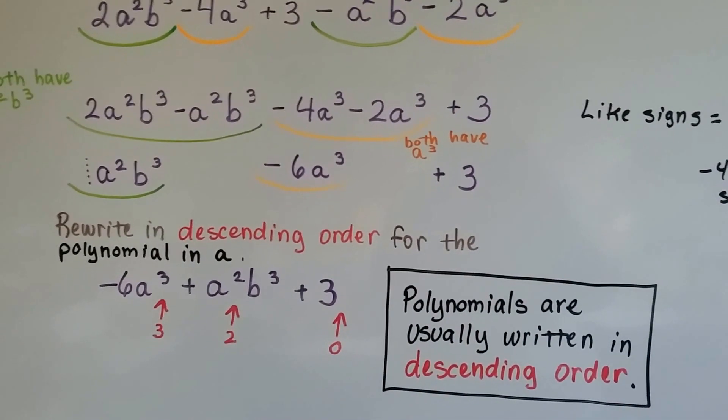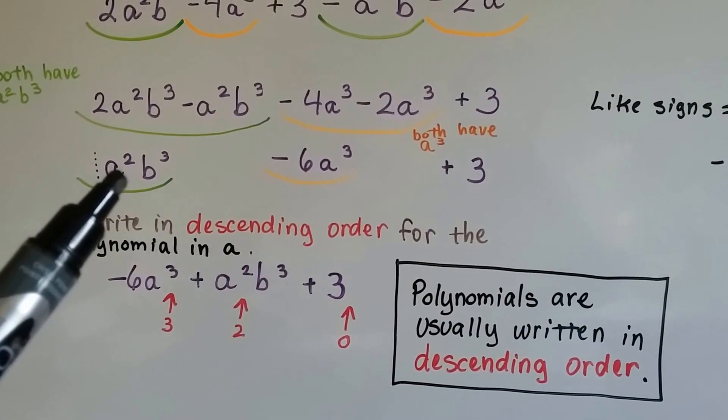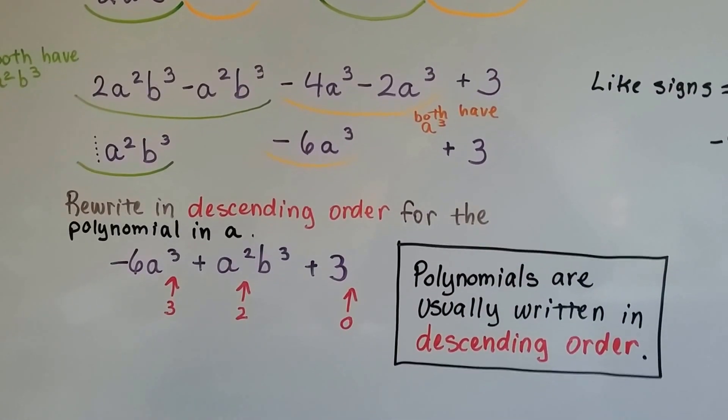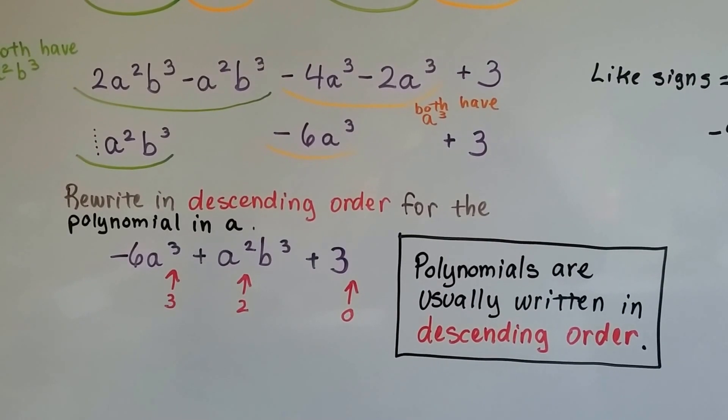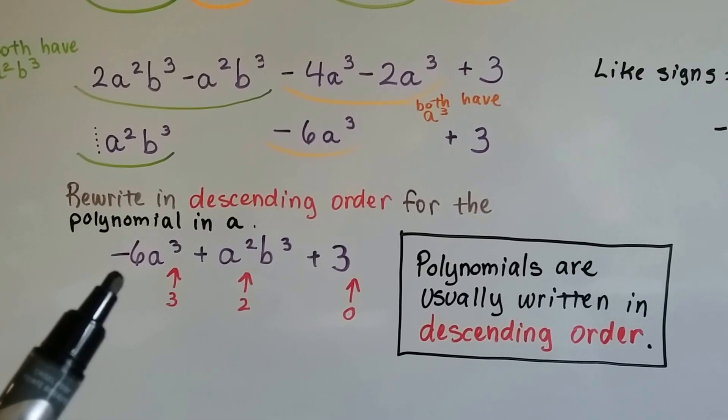We write in descending order for the polynomial in a. We're going to ignore b, he's just going for the ride. And when we rewrite it for the polynomial in a, the largest one, because it's descending order,